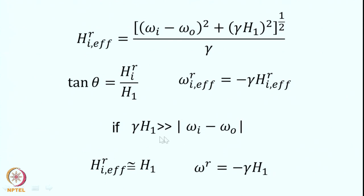If γH1 is much larger than (omega_i − omega-naught) — achieved by applying very high RF power — then H_IR effective simply equals H1. The precessional frequency in the rotating frame becomes −γH1 for every spin, because H1 is now the effective field and all spins precess at the same frequency.